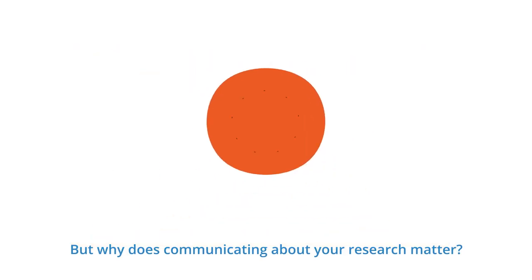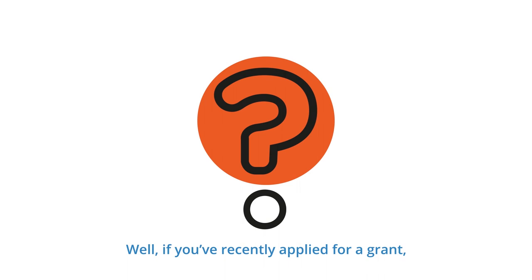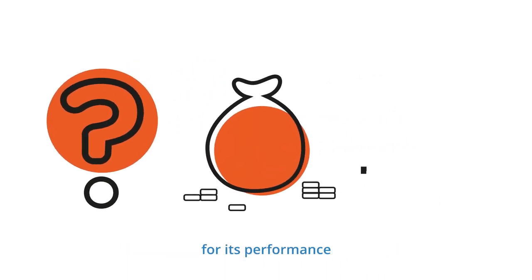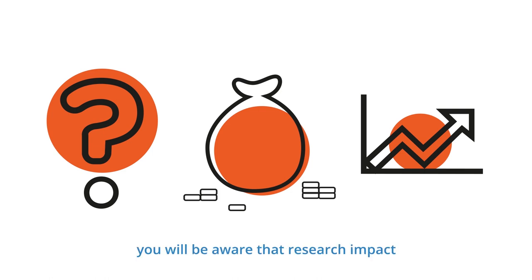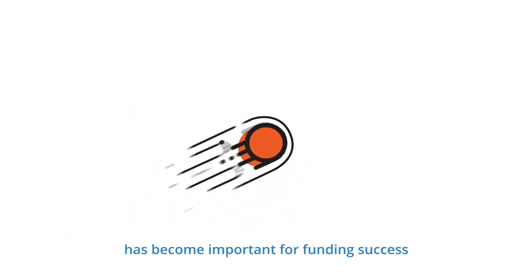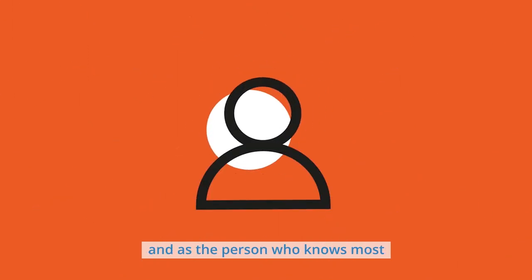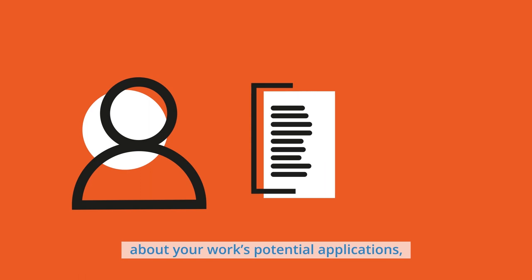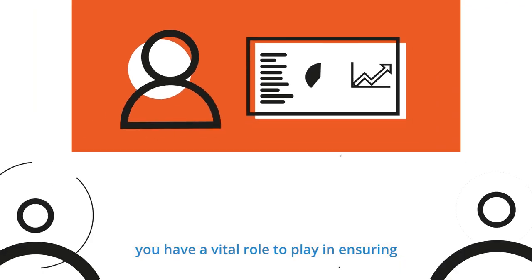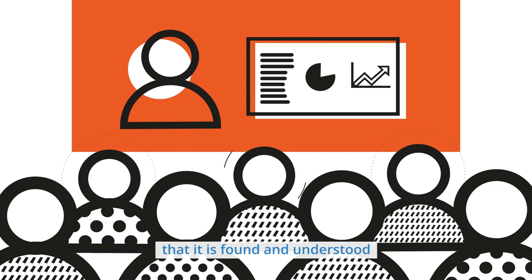But why does communicating about your research matter? Well, if you've recently applied for a grant, or if your institution's been assessed for its performance, you'll be aware that research impact has become important for funding success. Research impact doesn't happen by itself, and as the person who knows most about your work's potential applications, you have a vital role to play in ensuring that it's found and understood by your target audiences.